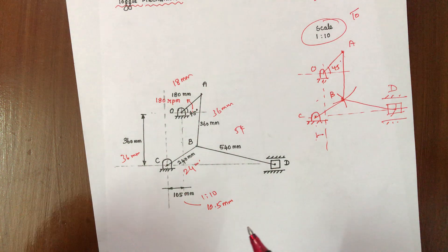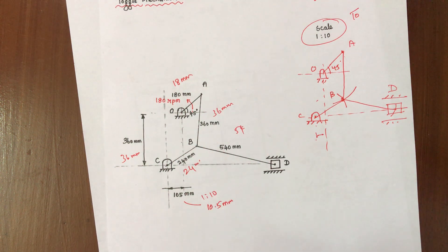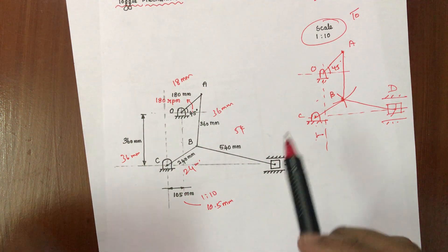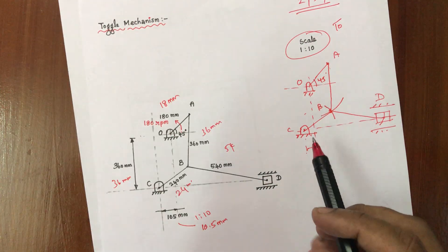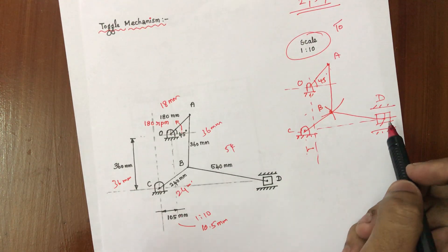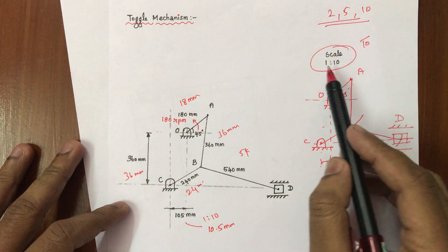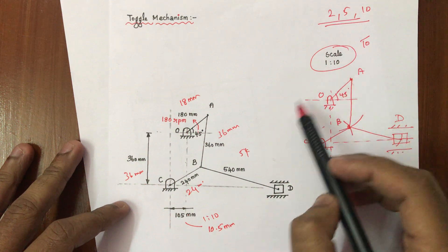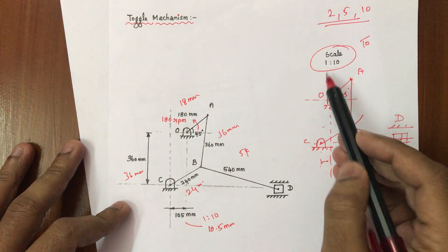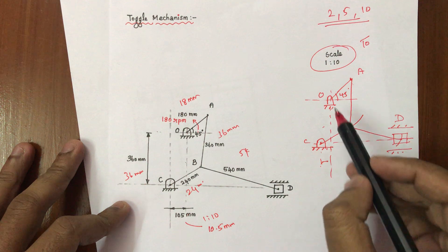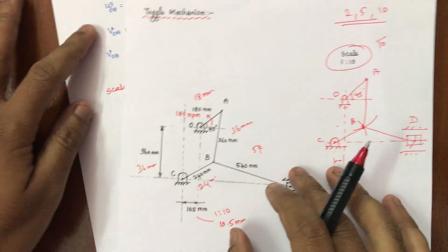Once the configuration diagram is drawn, we can directly go to solve the problem. The diagram is given in the question paper, so we need not worry about drawing it again. The key things are: how we start the diagram, how we end it, which scale to select based on the dimensions, starting with the fixed point, and ending with the slider.